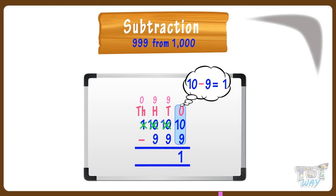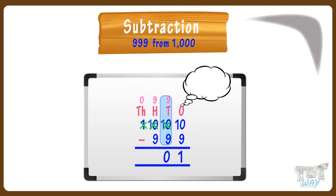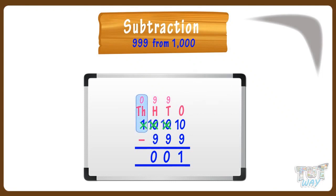Now, move to tens place. Subtract 9 from 9. 9 minus 9, we get 0. Write 0 at tens place. Now move to hundreds place. Subtract 9 from 9. 9 minus 9 equals 0. Write 0 at hundreds place. We have nothing at thousands place. We did it! 1,000 minus 999 equals 1.